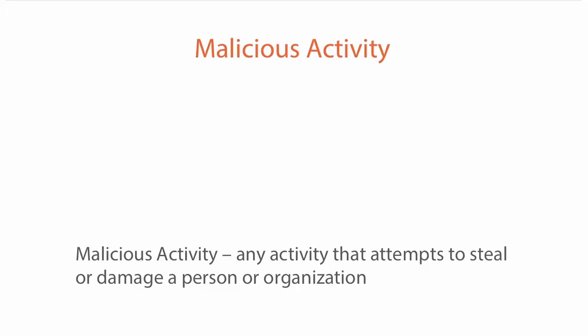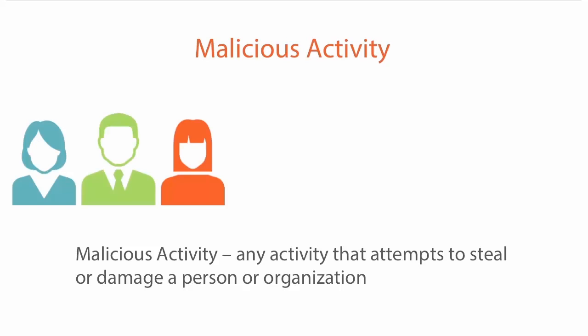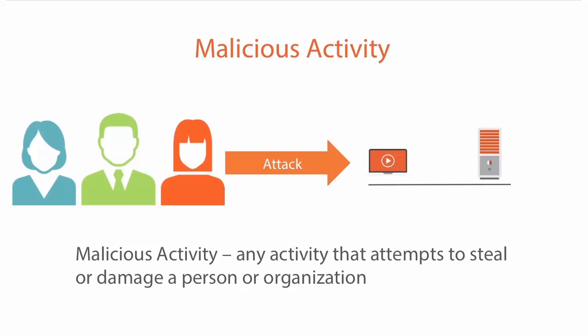Malicious activity is a little bit different than malicious code. Malicious code is where somebody has written malware and it gets on your system and causes disruption. Malicious activity is more direct — it's humans directly causing activity in an attempt to steal or damage something at the organization, whether it's your network or confidential data.